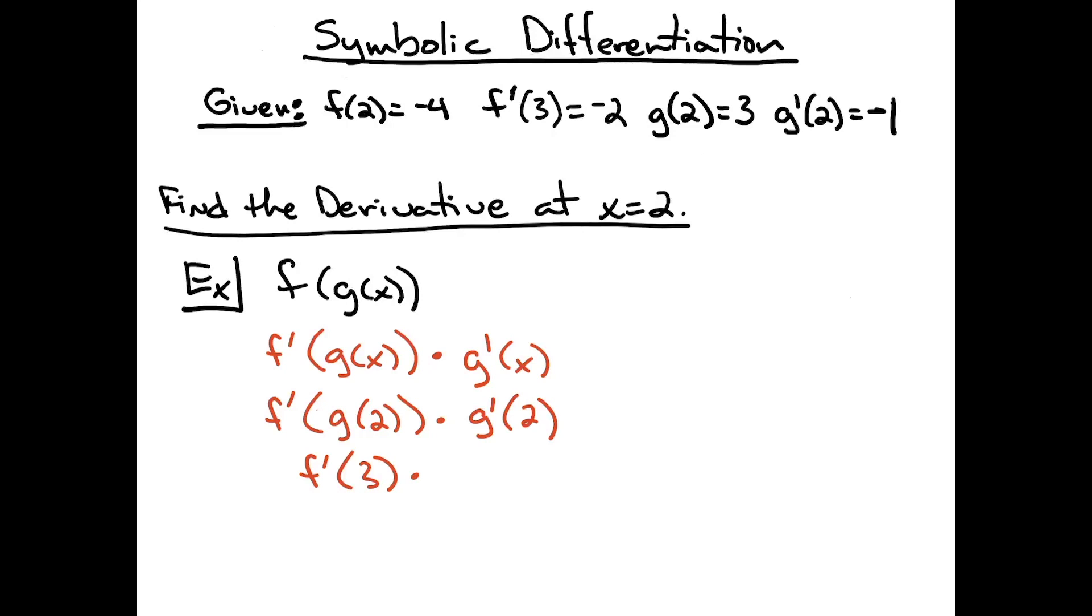g'(2) is -1, and f'(3) is given as -2. So -2 times -1 gives me a final answer of 2.